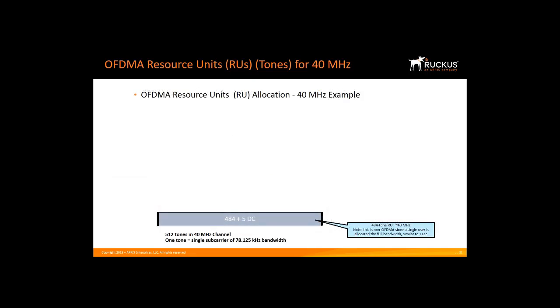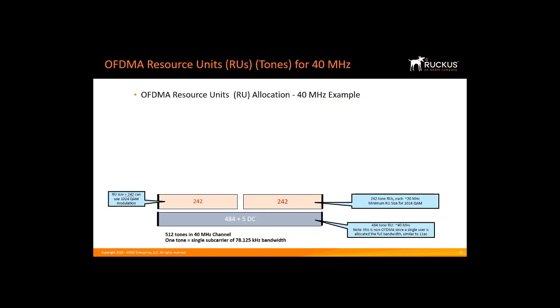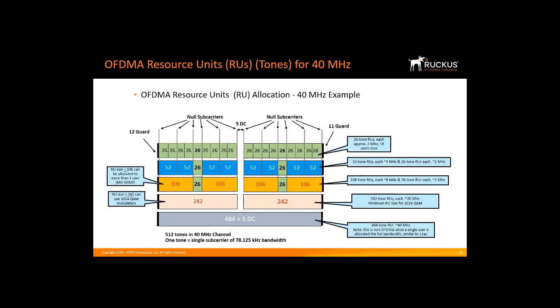Here we show a 40 MHz channel. There are 512 available tones or sub-carriers in a 40 MHz channel — one tone equals a single sub-carrier of 78.125 kHz. For high-bandwidth applications such as video, the AP can decide to allocate the entire channel to a single user, which would be the same as 11AC today and does not fit the definition of OFDMA. Or, the AP may serve two users simultaneously, each occupying 242-tone resource units of approximately 20 MHz. For small packets such as IM or voice over Wi-Fi, the AP will mix and match different RUs based on traffic type, dividing resources all the way down to 26-tone RUs, and in theory serve 18 users simultaneously.